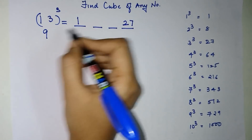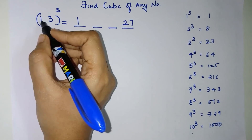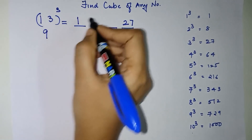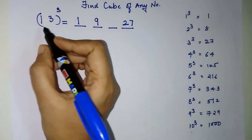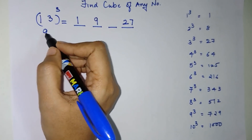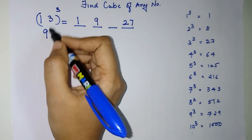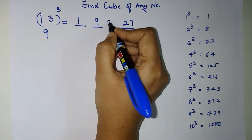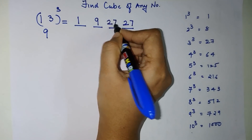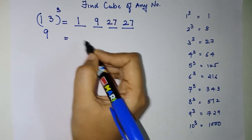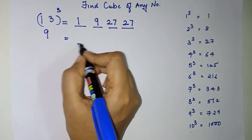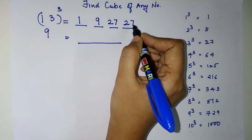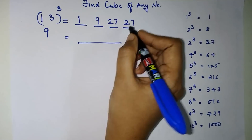To find the second part, we multiply 9 by the first number: 9 × 1 = 9. To find the third part, we multiply by the last number: 9 × 3 = 27. So our four parts are: 1, 9, 27, 27.